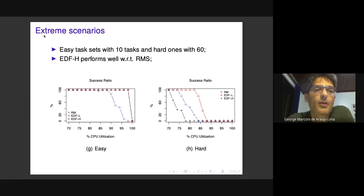To complete the experiments, we generated two extreme scenarios: one with 10 easy tasks and another with 60 hard tasks. Again, EDF-H performs worse than EDF-L for both. Rate monotonic scheduling performs worse than both EDF versions for the easy scenario. For the hard scenario, it performs slightly better than heap-based EDF.